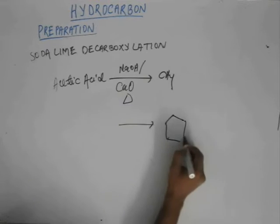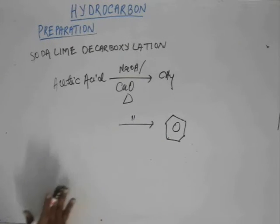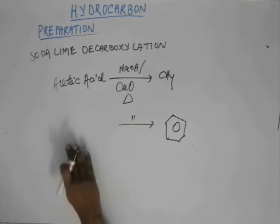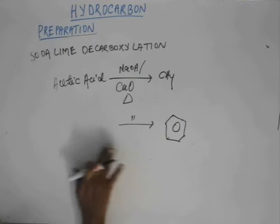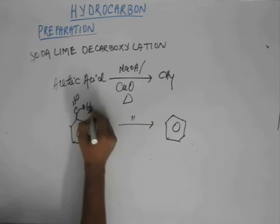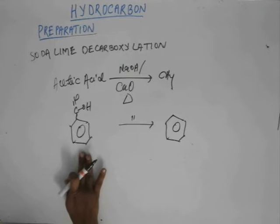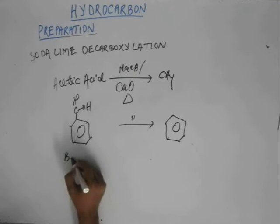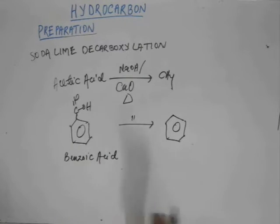Now suppose I have benzene as the final product of soda lime decarboxylation. Then what was my reactant? You have to be quick and must get this answer. In order to write the reactant, you just have to increase one carbon, because one carbon is removed in the form of CO2. So to get back to the reactant, you just have to increase one carbon in the product — outside the ring — one carbon in the carboxylic group. So this is benzoic acid, and you must know this; this is a very important common acid. If we carry out soda lime decarboxylation of benzoic acid, you will get benzene.